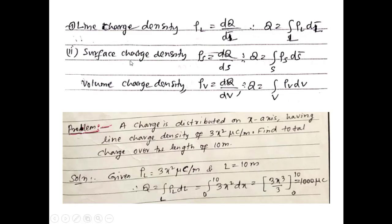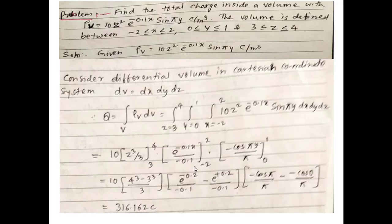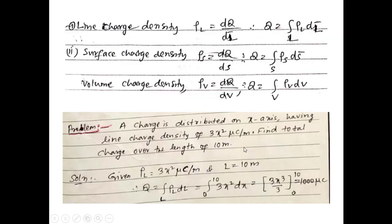We will solve one problem on line charge density. A charge is distributed on the x-axis with line charge density rho-L = 3x² micro-coulomb per meter. Find the total charge over a length of 10 meters. Given rho-L = 3x² micro-coulomb/m and L = 10 m, Q = ∫ rho-L dL = ∫ 3x² dx, where dL = dx since dy and dz are zero. Integrating gives 3x³/3; at x = 10 we get 1000 micro-coulomb.